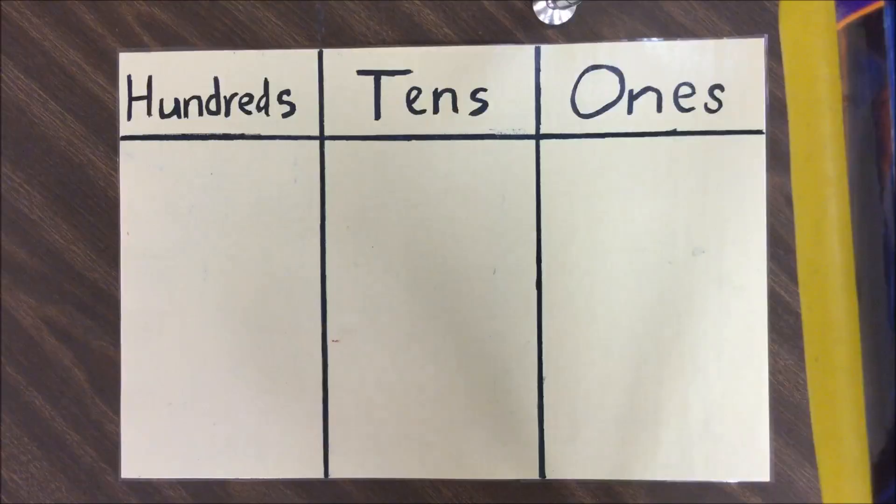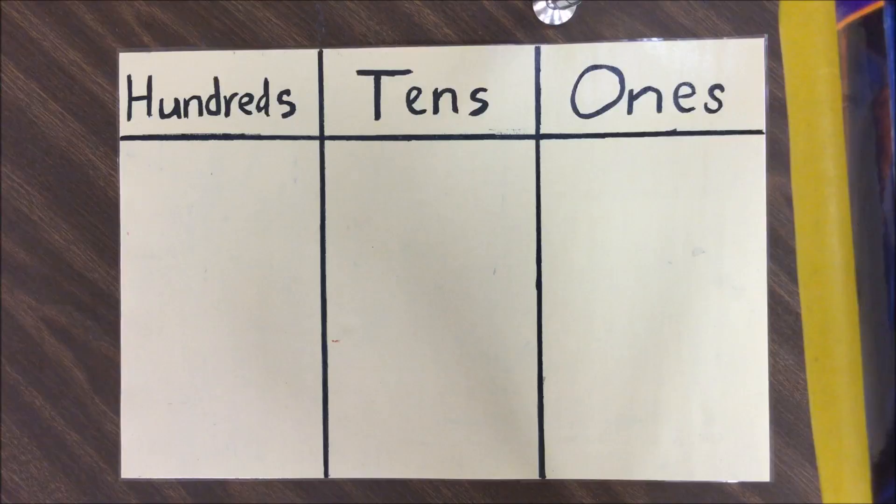Today we're going to be looking at a word problem for our third grade class. We're going to use base-10 blocks and a number line to represent a subtraction problem and how we solve it. The problem says: Sophie has 104 stickers. She decided to give away 27 stickers to Leah. How many stickers will Sophia have left after giving some away?